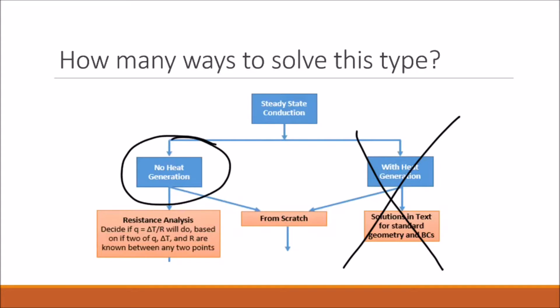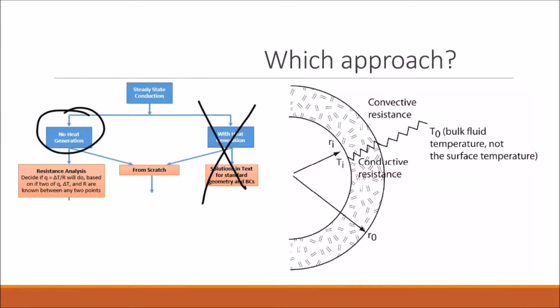So, we head down the no heat generation path and we're left with two ways to solve this problem: through a from scratch approach or using a resistance analysis. So for this problem, it's pretty obvious that we won't be using the from scratch approach. Because the problem specifically states to find an expression for the steady state heat flow in terms of the temperature difference and the total resistance. So the problem mentions resistance, so it's pretty obvious that we need to use some type of resistance analysis.